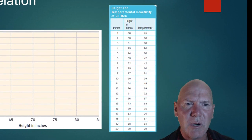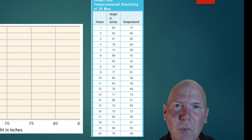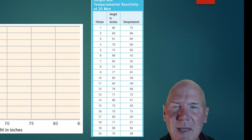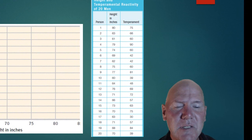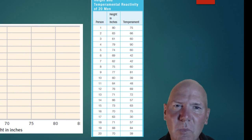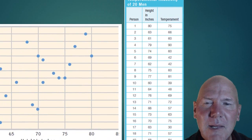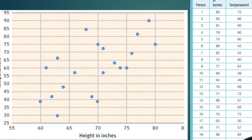Let's look at this data on this chart. We have height in inches and temperament — temperament being how reactive you are to things. A psychologist has figured out a way to measure temperament scores, and we compare them to height in inches. There are 20 data points. Is there a correlation? It's kind of difficult to tell just from the raw data, so we use a scatter plot, which shows a dispersion of dots plotted from the data. When you look at it, you can see there actually is a positive correlation happening here.